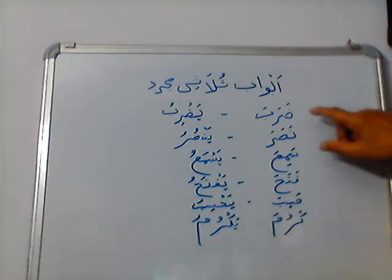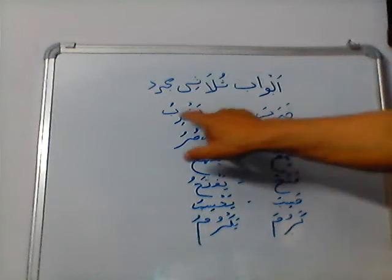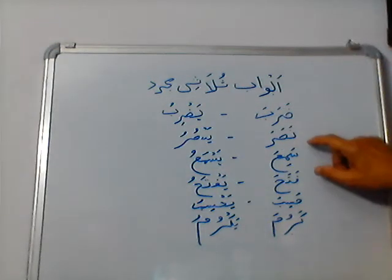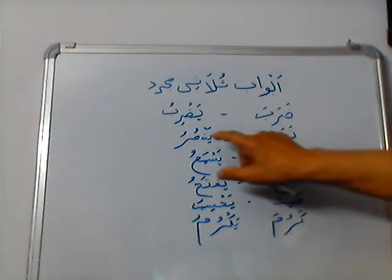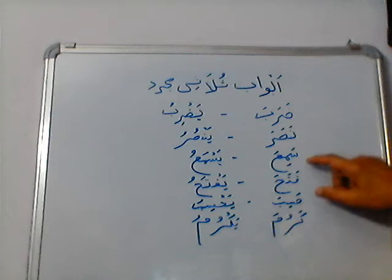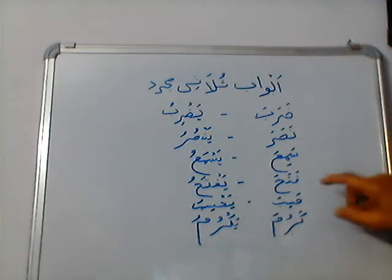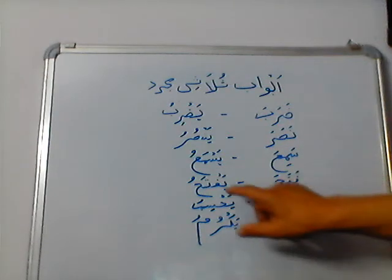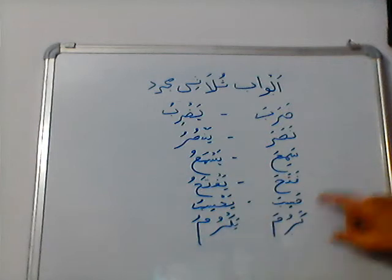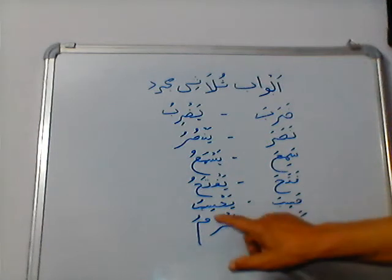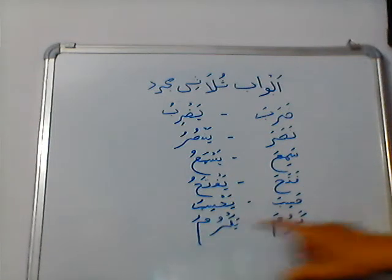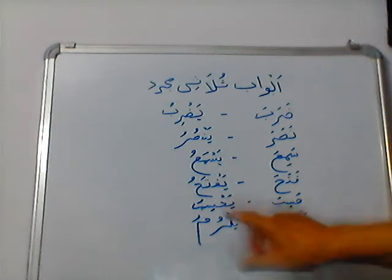These are as follows: Zarbha changes into Yajrivo. Nasara changes into Yansuru. Samya changes into Yasmu. Fatah changes into Yaf Tahu. Hasiba changes into Yasibu. And Karuma changes into Yakurumu.